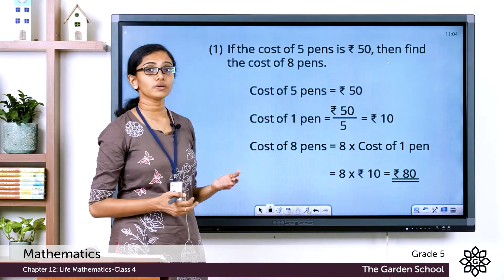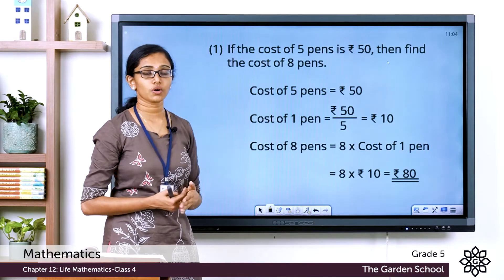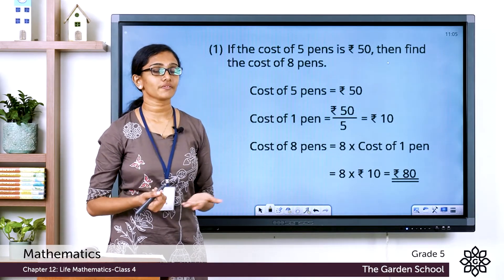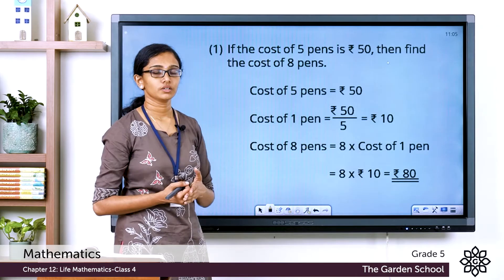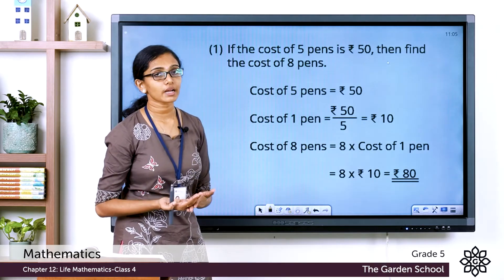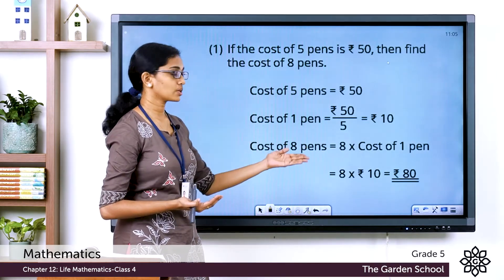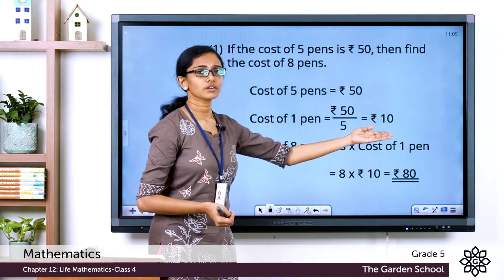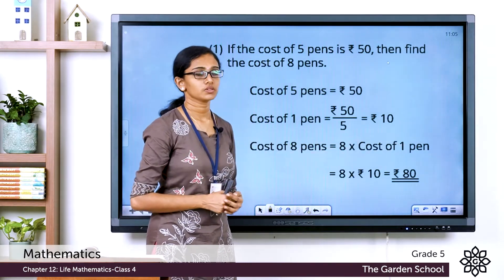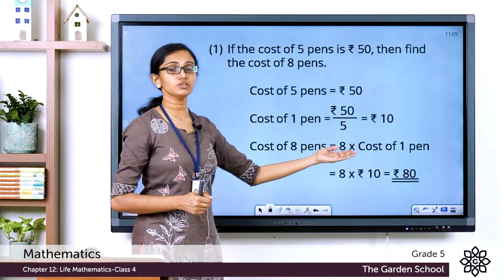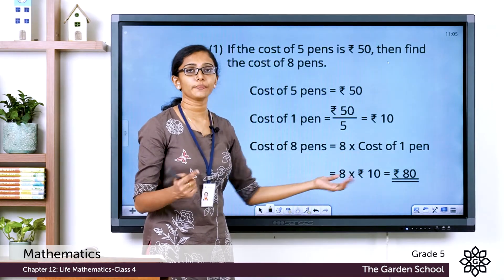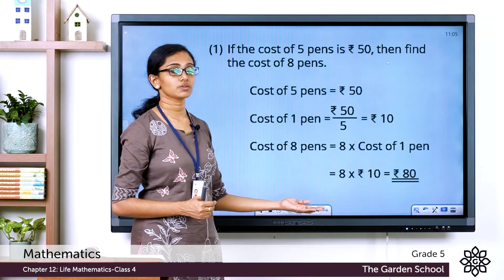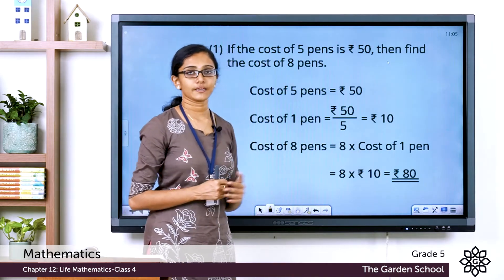Now we are asked to find out the value of 8 such units or 8 pens, so the required number of units is 8. The value of the required number of units equals the number of required units multiplied by the value of 1 unit — that is 8 into rupees 10, which equals rupees 80.